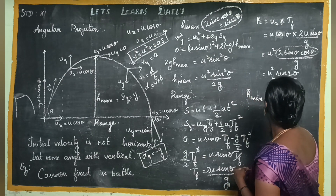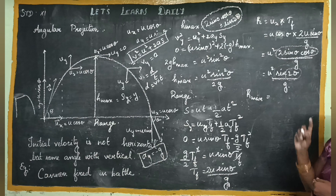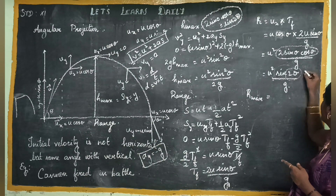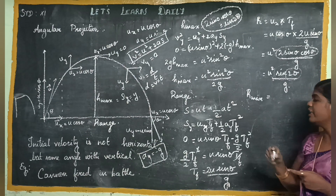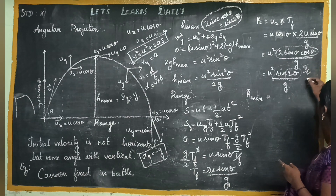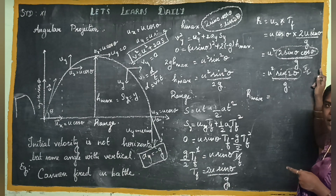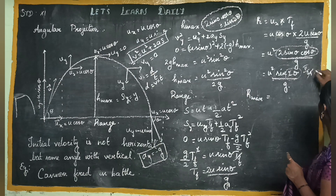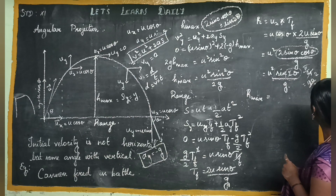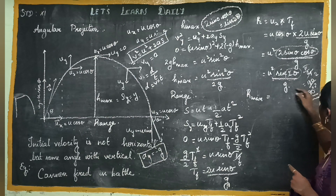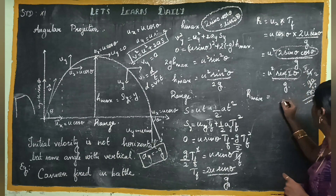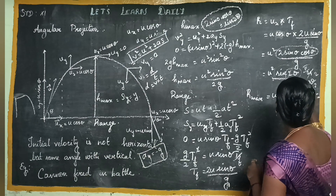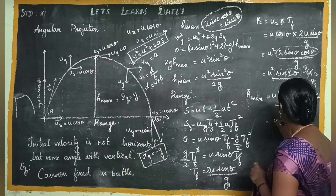Now we calculate the maximum range. For maximum range, sin 2 theta must equal 1, which means 2 theta equals 90 degrees, so theta equals pi by 4 (45 degrees). Substituting theta equals pi by 4: R_max equals u squared times sin(2 times pi/4) by g, which gives R_max equals u squared by g.